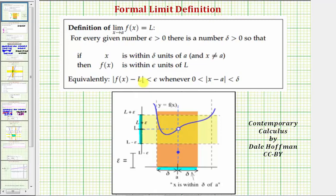We can also state this using absolute value inequalities shown here, which we'll use to show a relationship between epsilon and delta. Where the absolute value of f of x minus L, meaning the distance between f of x and L, is less than epsilon, whenever the absolute value of x minus a, the distance between x and a, is less than delta and greater than zero.